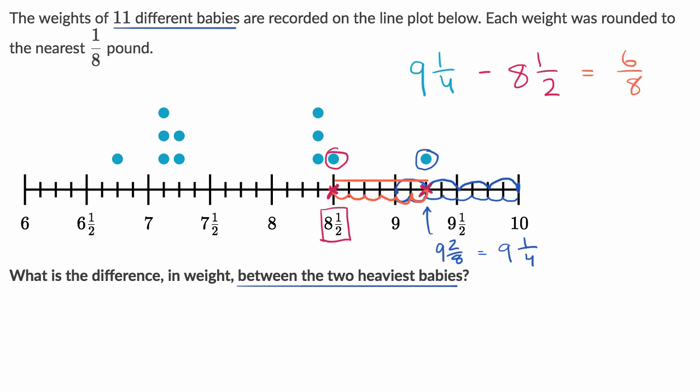We could also think about it in terms of fourths. So this is 1/4, 2/4ths, and 3/4ths. So this is equal to 3/4ths. So what's the difference in weight between the two heaviest babies? It is 3/4ths of a pound.